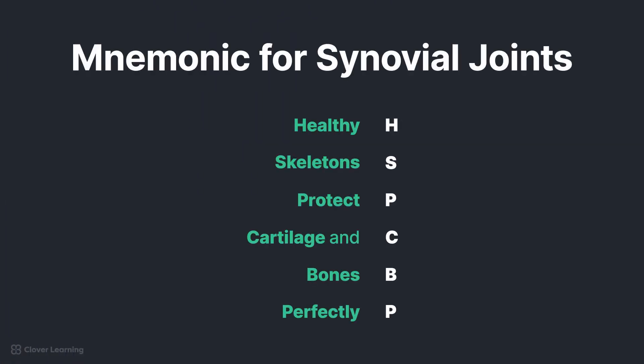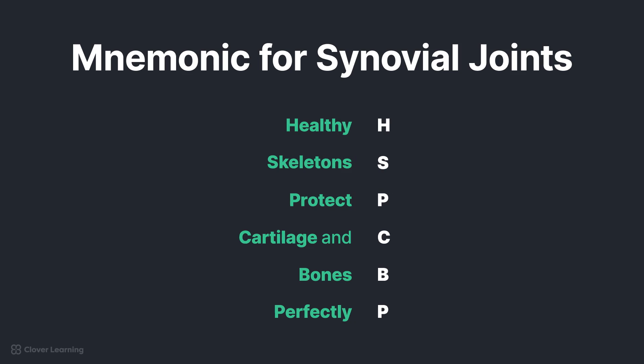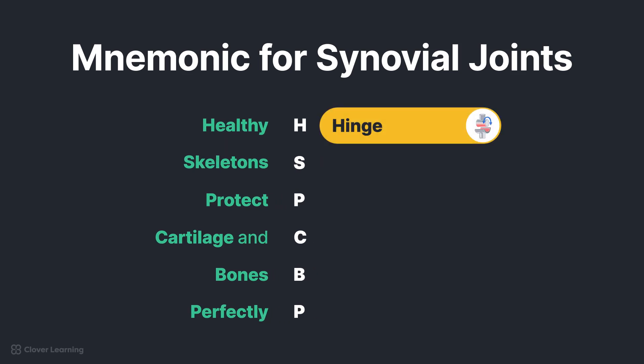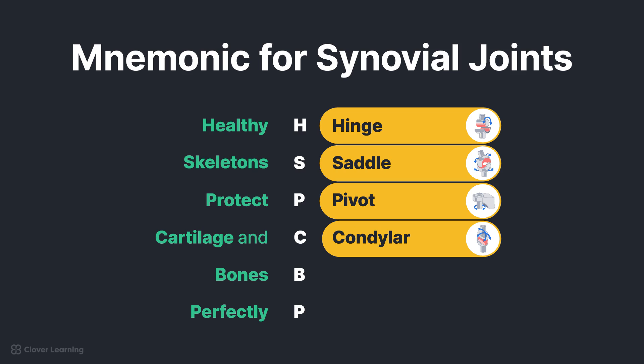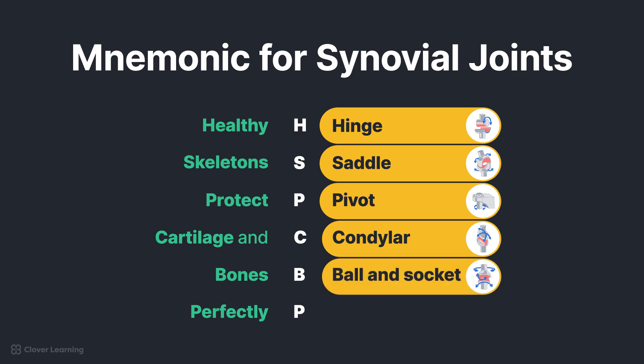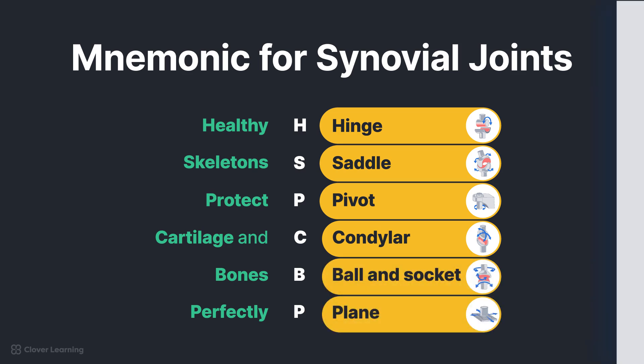There is a mnemonic that can help you remember the six types of synovial joints: Healthy skeletons protect cartilage and bones perfectly — or hinge, saddle, pivot, condylar, ball and socket, and planar.